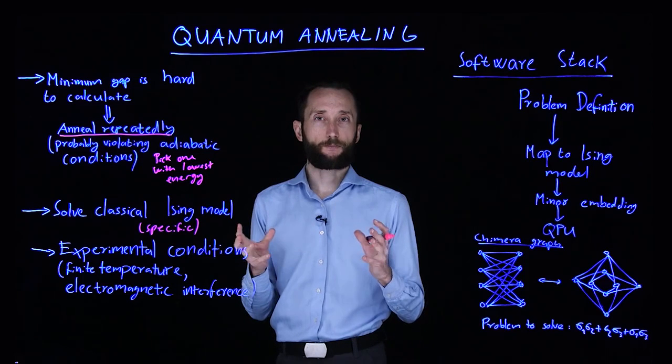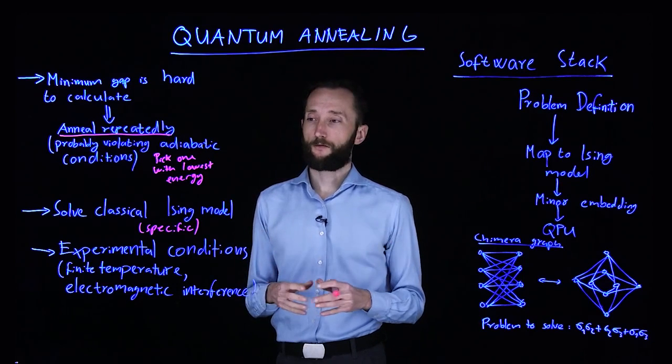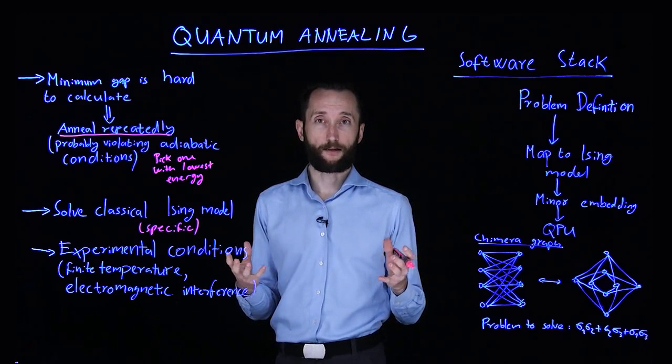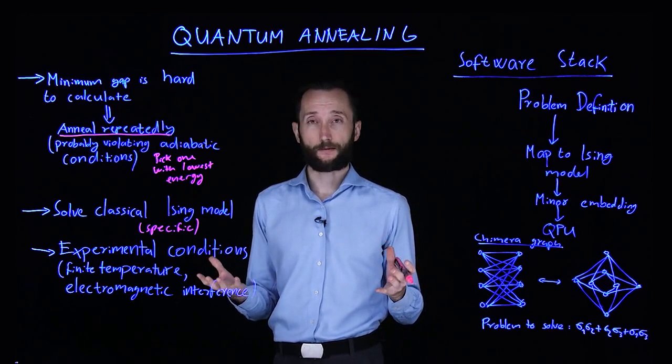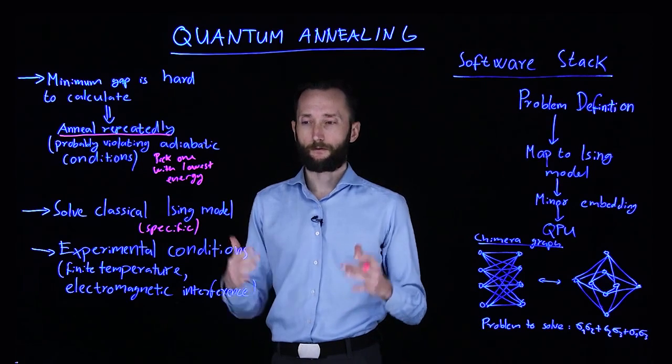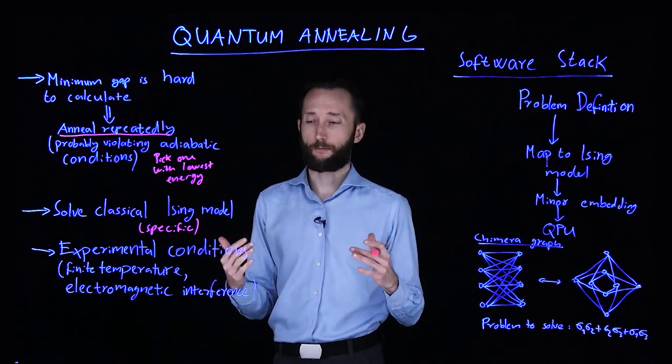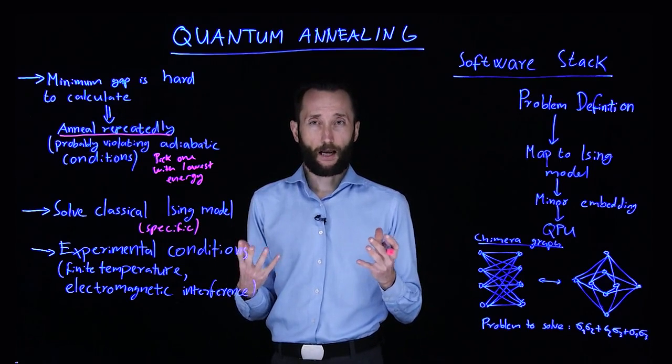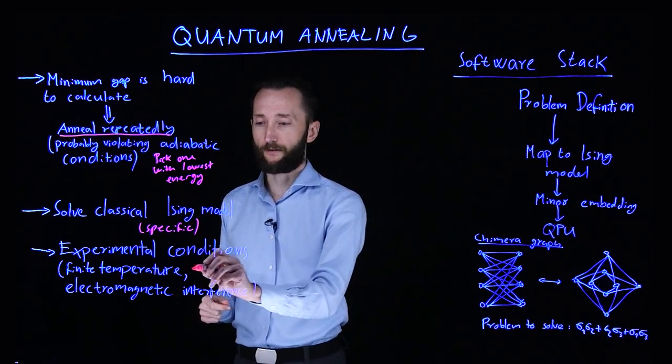Then there are all sorts of experimental conditions that you face. For instance, there is a 2,000 qubit quantum annealer implemented by D-Wave Systems. This is a superconducting architecture, which means that you have to cool it down to about 10 mK or so. But that's not absolute zero.